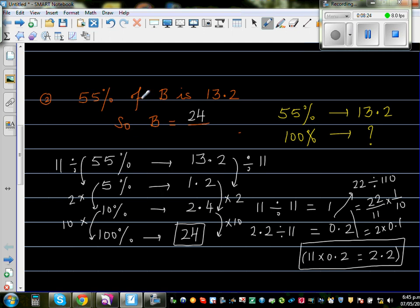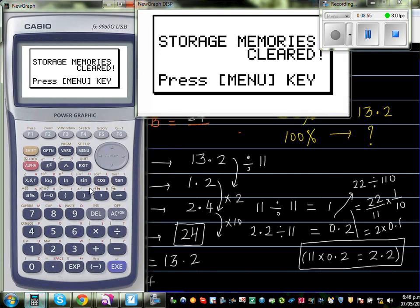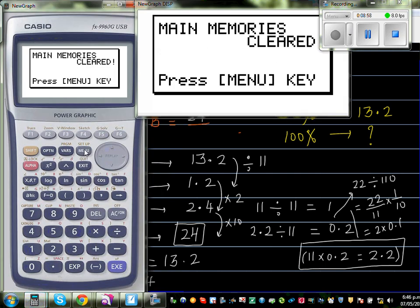So 55% of 24 is 13.2. Just to show how to do this on a calculator. 55% of 24 is 13.2. If you want to do this on a calculator, 55% is out of 100 which is 0.55 times 24. Let me get my calculator. You can use a simple calculator. So this is 0.55 times 24.